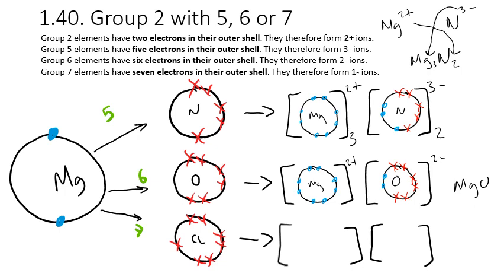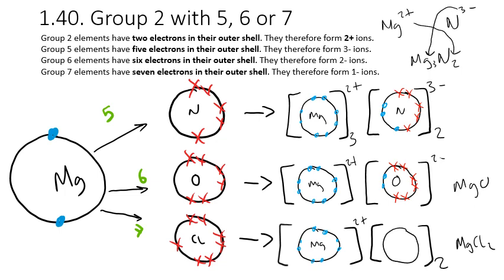The last group 2 combination: magnesium bonding with chlorine. Chlorine only requires 1 electron and magnesium needs to get rid of 2, so we need 2 chloride ions for every magnesium ion — making MgCl2. Same as before, magnesium forms a 2+ ion with 8 in the outer shell. We're going to have 2 chlorine 1- ions, each with 7 electrons in the outer shell, each gaining 1 from the magnesium.